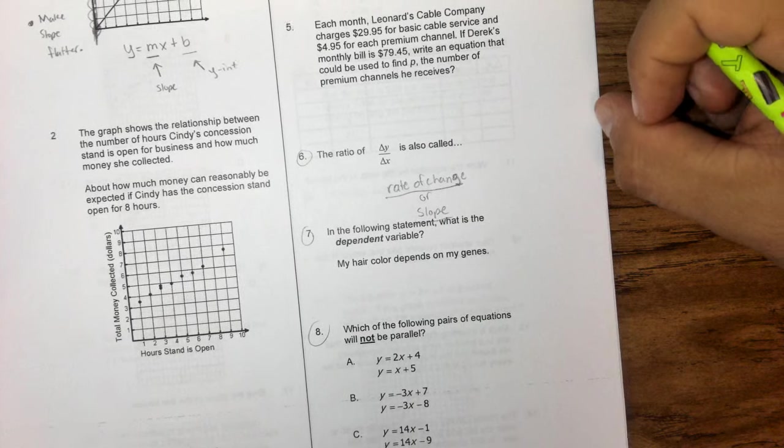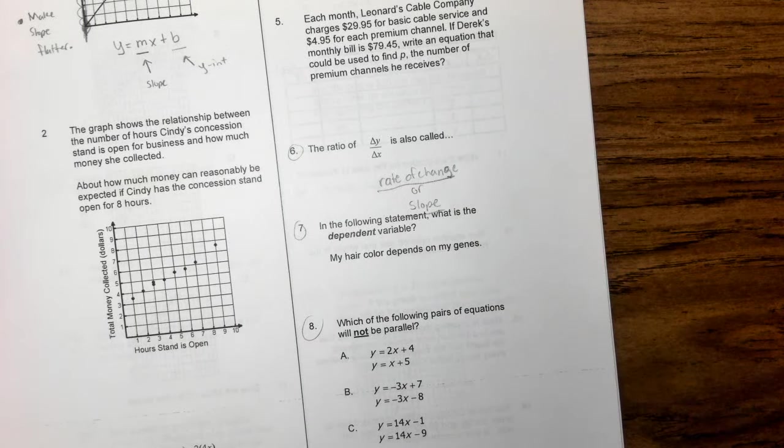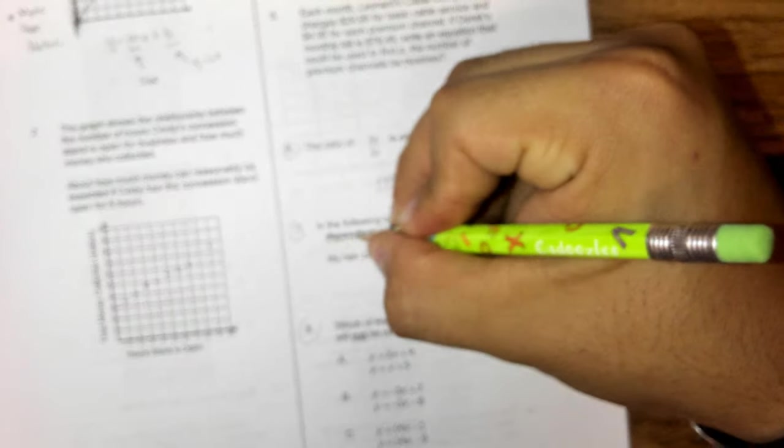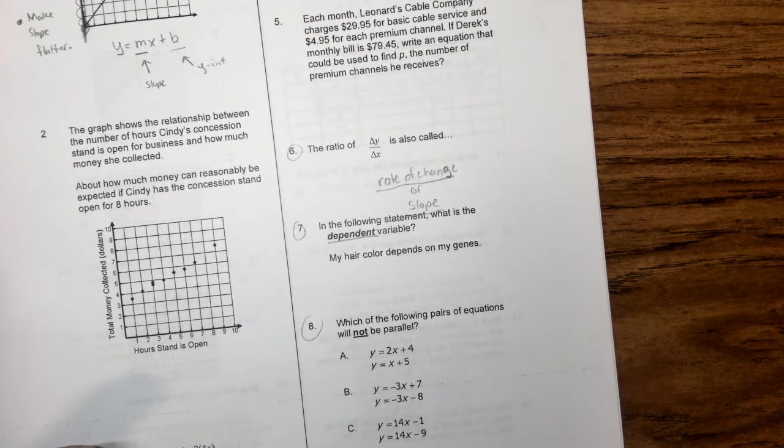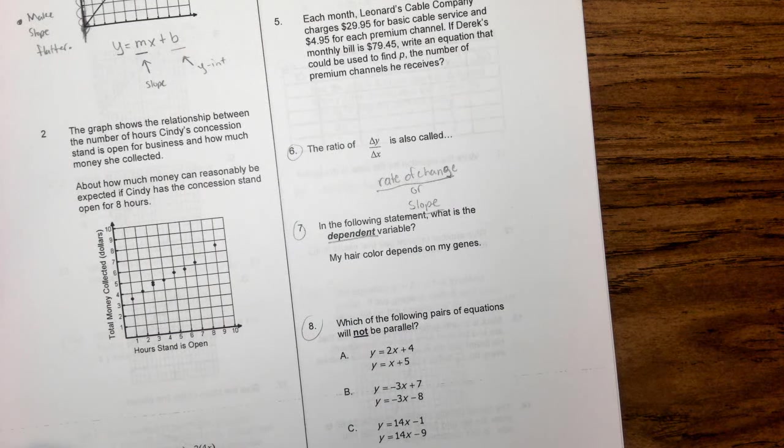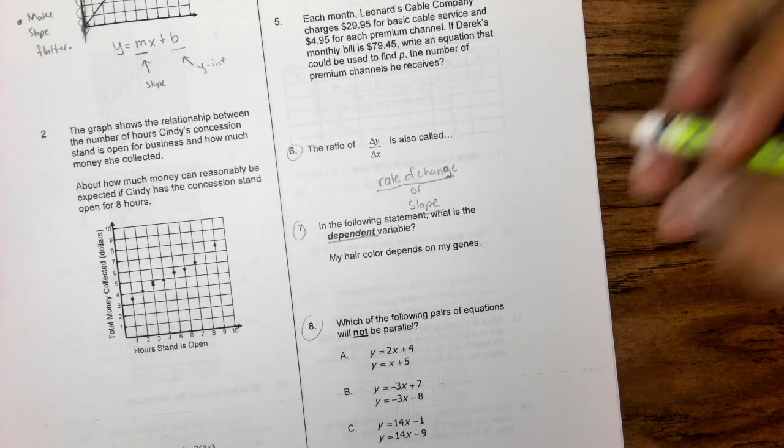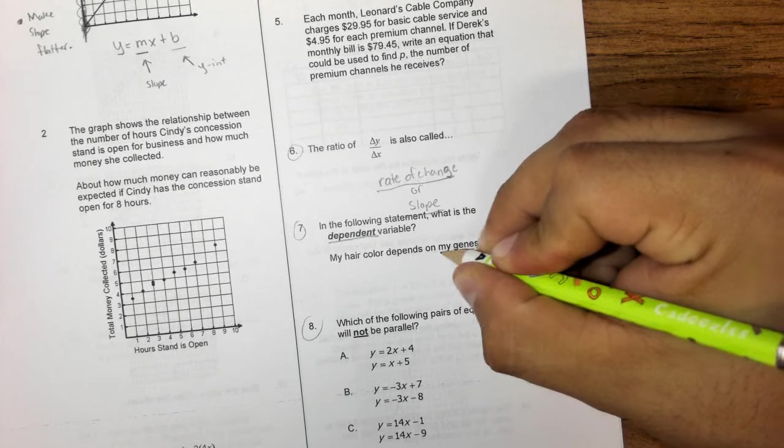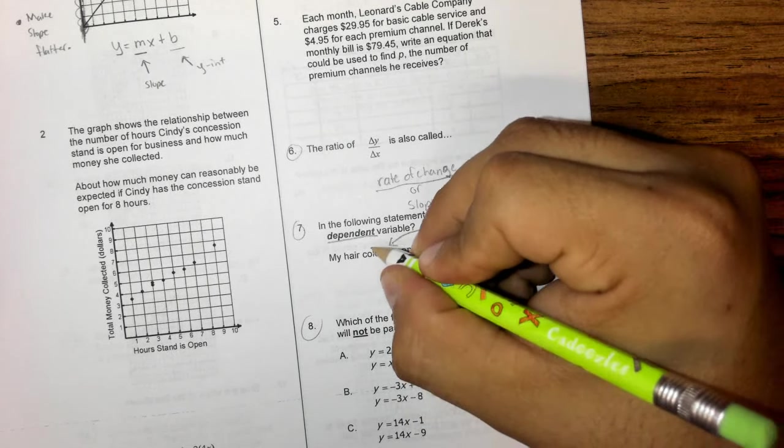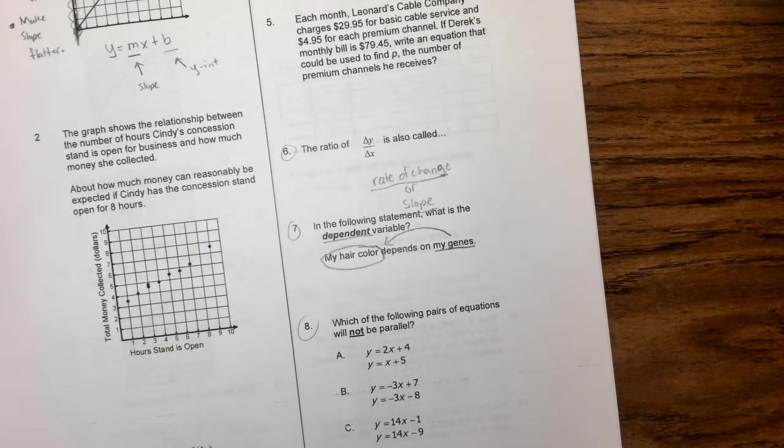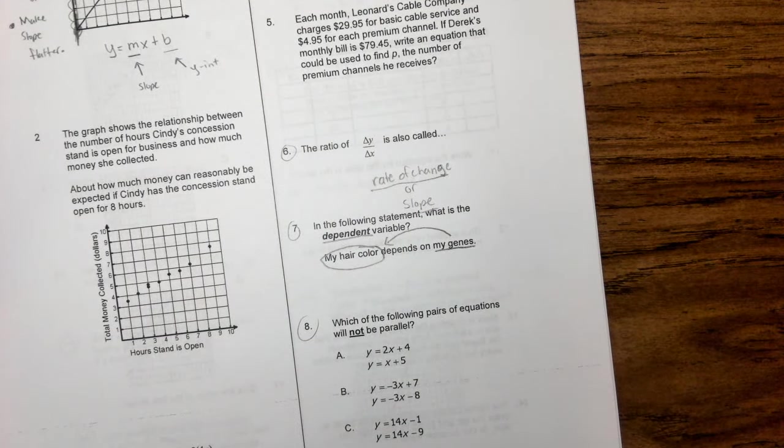Number seven, it says, in the following statement, what is the dependent variable? My hair color depends on my genes. So dependent means what is it, you know, what's the thing that it's, that it has to depend on. So what is it depending on? So the thing here that we can't control is going to be our genes. Our genes in turn control our hair color. So my hair color in this case would be my dependent variable. My hair color depends on my genes.